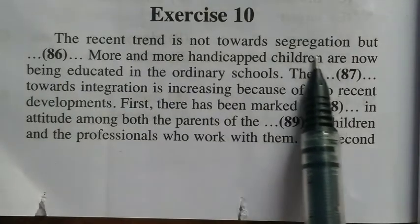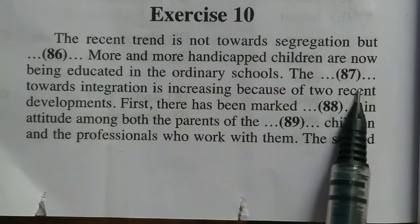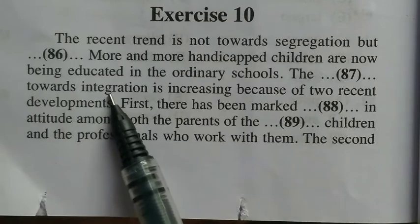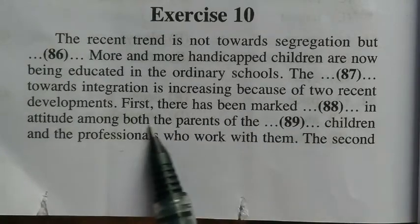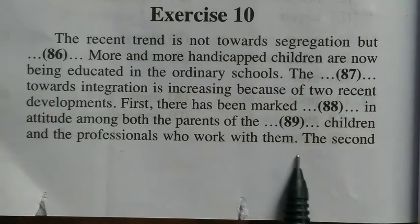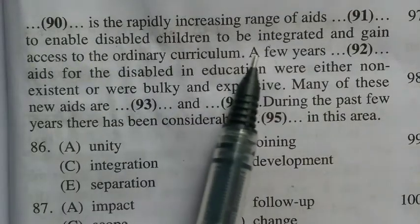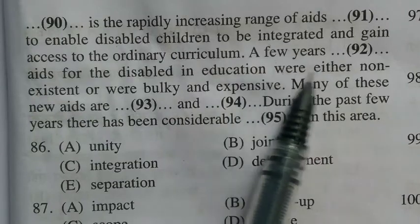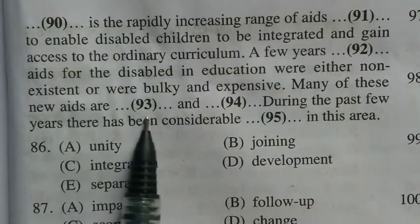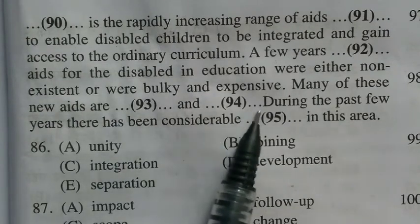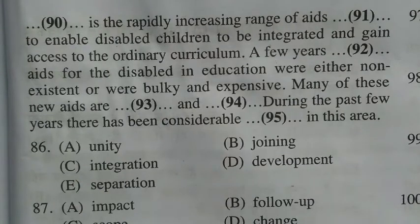Re-reading exercise ten filled: 'The recent trend is not towards segregation but integration. More and more handicapped children are now being educated in the ordinary schools. The trend towards integration is increasing because of two recent developments. First, there has been a marked change in attitude among both the parents of the handicapped children and the professionals who work with them. The second development is the rapidly increasing range of aids available to enable disabled children to be integrated and gain access to the ordinary curriculum. A few years ago, aids for the disabled in education were either non-existent or were bulky and expensive. Many of these new aids are small and inexpensive. During the past few years there has been considerable development in this area.'